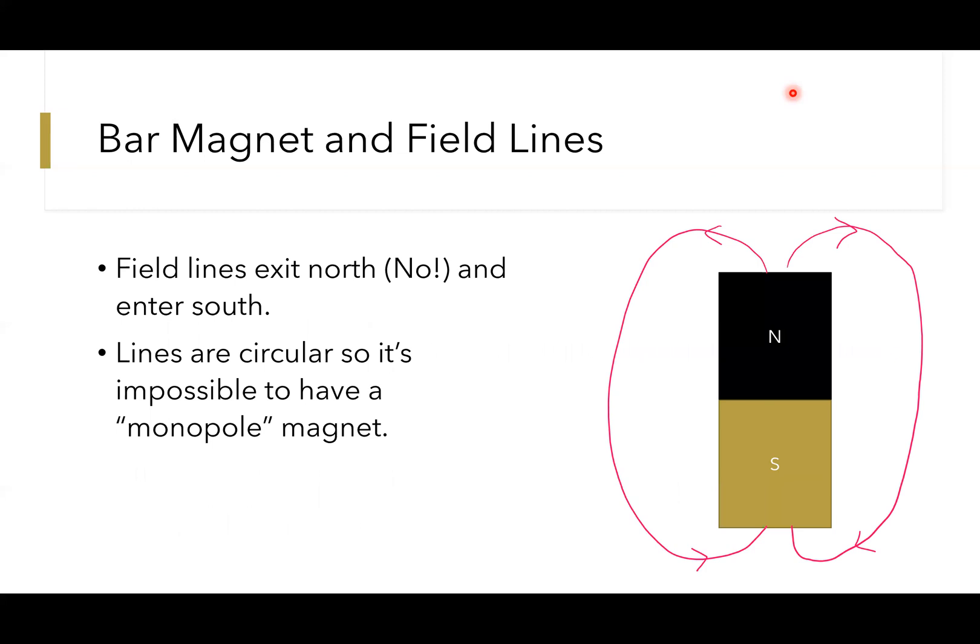I mentioned bar magnets before when talking about ferromagnetic materials. Understanding magnetic field lines is very important. Field lines exit a north pole—think no, get away—they exit the north pole and they enter the south pole. As you can see by this diagram, these lines are circular, so they continue into the magnet itself.